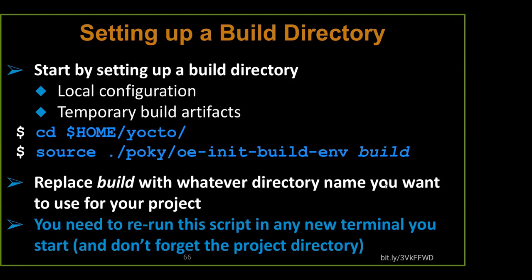The first time, it sets up all the environment variables. The second, third, and fourth times, it will go ahead and use the existing environment variables and set them up correctly, setting up all the appropriate paths and producing the native tools. You're going to need to rerun this script in any new terminal you open — otherwise when your build doesn't find the right compiler and starts building for x86 instead of QEMU ARM, that's going to be a problem.